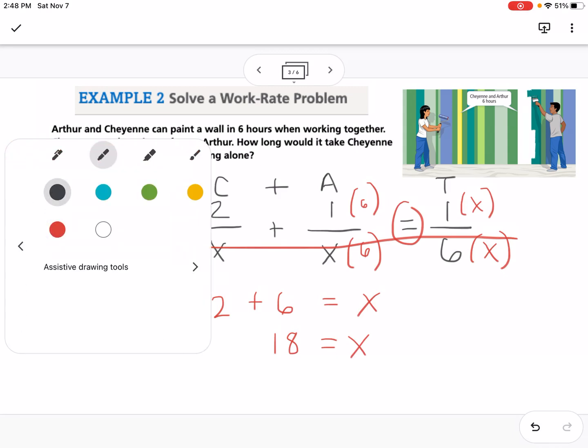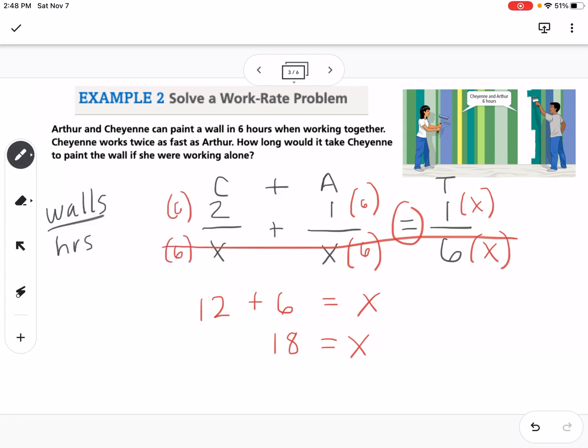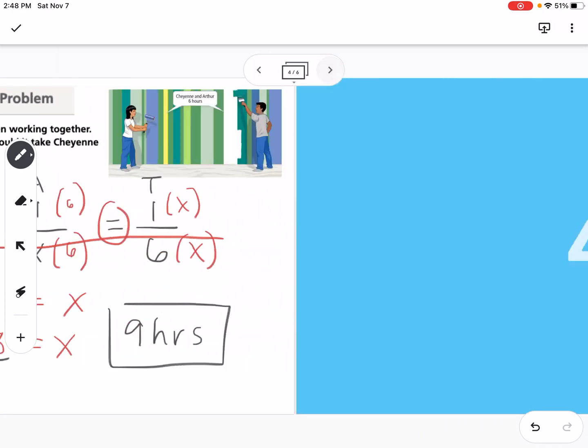Now always with these real world problems, you need to think back to what—how we set this up and what that x represents. So the x really represents how long it takes Arthur to paint one wall, but it's how long it takes Cheyenne to paint two walls. So—but we want to know how long would it take Cheyenne to paint the one wall alone. So it would actually be 9 hours for her to paint one wall alone because 18 is how long it takes her to do two.